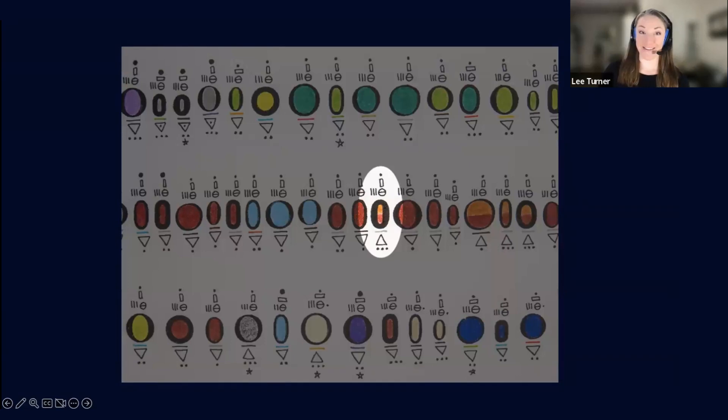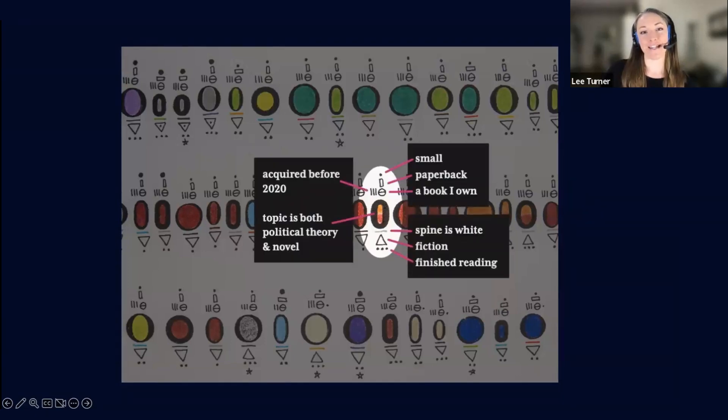Let's talk about 1984. The annotations tell us I acquired the book before 2020. The topic is both political theory and it's a novel. It's small. It's a paperback. It's a book that I own. The spine is white. It's fiction and I've finished reading it.